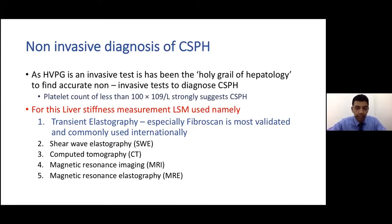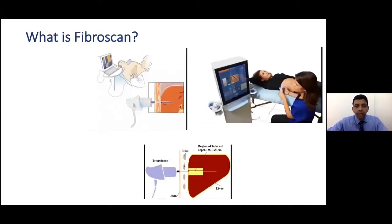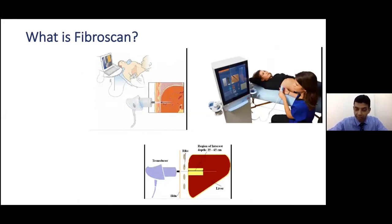There are a lot of modalities available, but transient elastography is the most available, and FibroScan is the one which is most validated and used. FibroScan is like a simplified ultrasound machine — it shoots one beam of ultrasound wave through the liver, and depending on how stiff the liver is, we get a reading. This has revolutionized hepatology because now gastroenterologists can do this themselves.